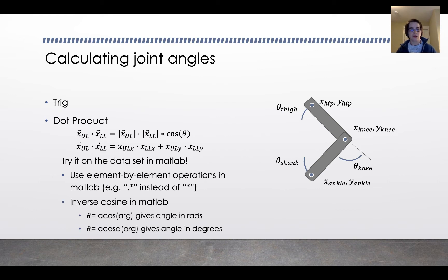The other thing that you need to remember is that the inverse cosine in MATLAB, by default, gives you an angle in radians. If you want degrees, you need to use the acosd argument to get your arc cosine.